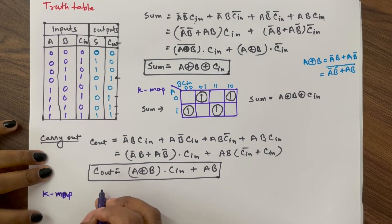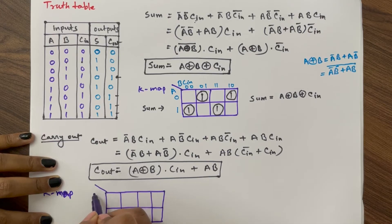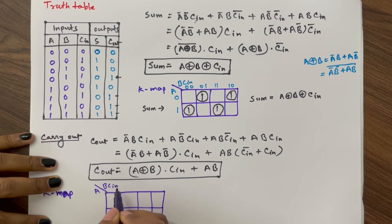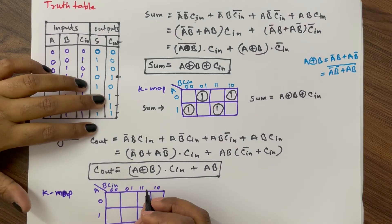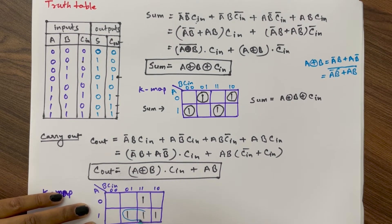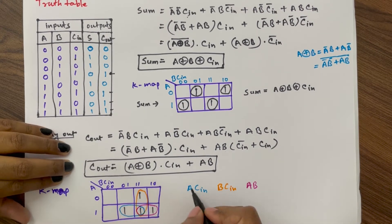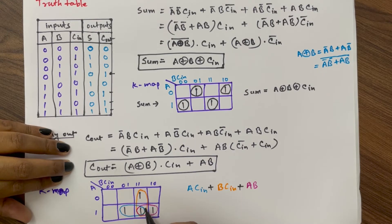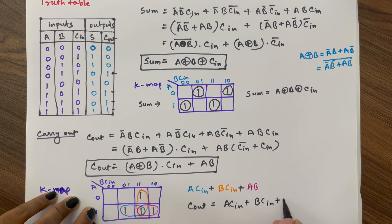We can also write the expression for C-out using a K-map. Writing ones in the corresponding cells where C-out is 1, we can group them into three groups. The first group gives A·C-in, the second group gives B·C-in, and the third group gives A·B. So we can also write C-out as A·C-in + B·C-in + A·B.